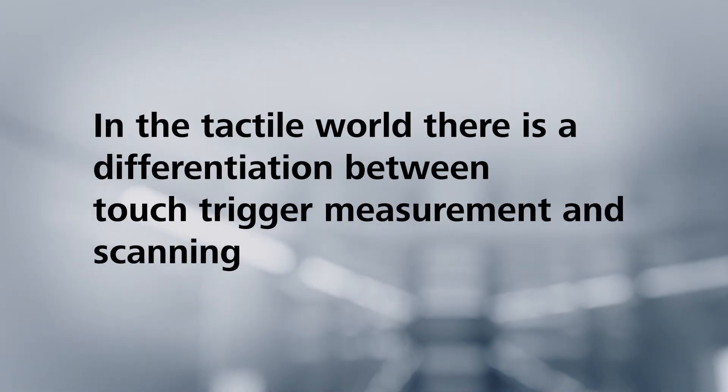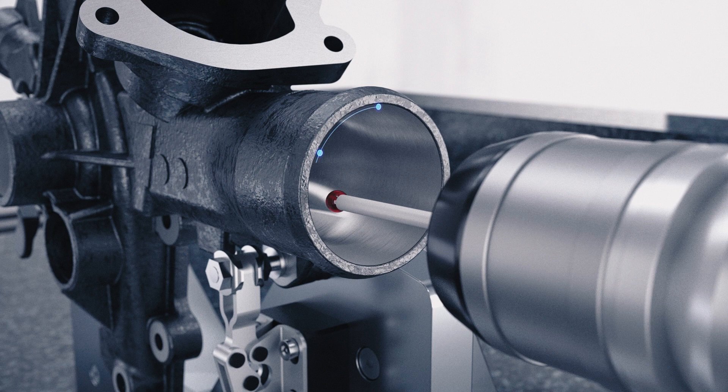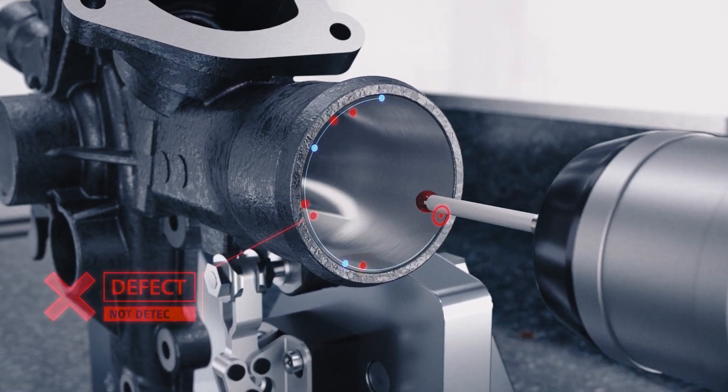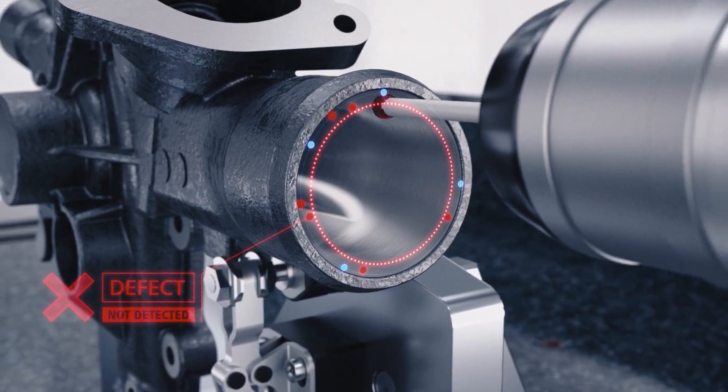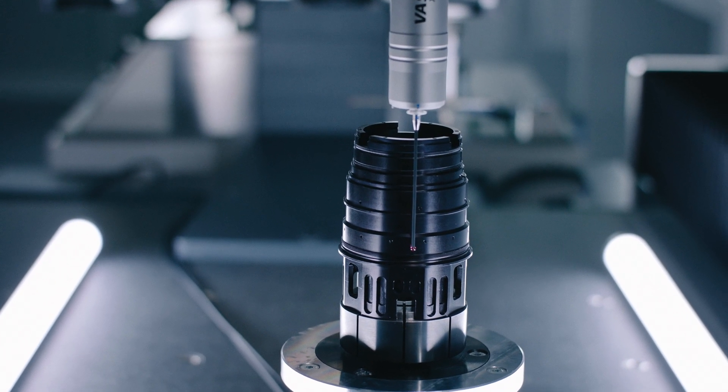In the tactile world there is a differentiation between touch trigger measurement and scanning. With touch trigger measurements you collect single points. The area between the points is calculated through interpolation. This can lead to lower accuracy and certainty of your measuring results.